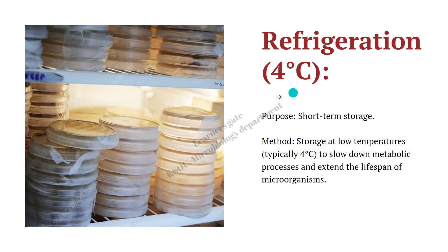The first method is refrigeration, followed at 4 degrees Celsius. It is a short-term storage process wherein the microorganism is stored in a refrigerator at 4 degrees Celsius, which results in suppression of its metabolic processes. However, certain microorganisms — especially psychrophiles — have the capacity to grow at 4 degrees Celsius, for example Pseudomonas aeruginosa species.